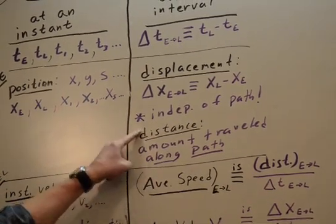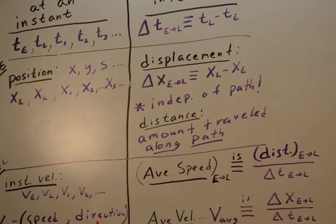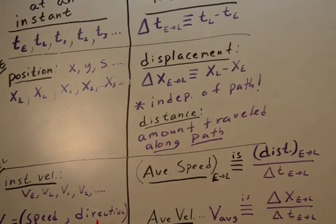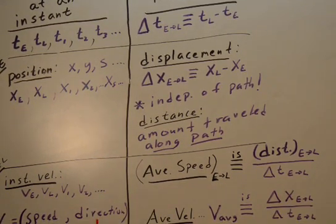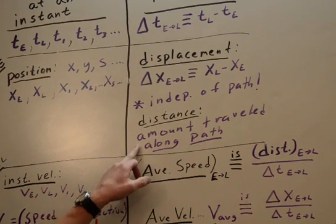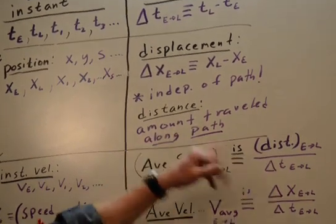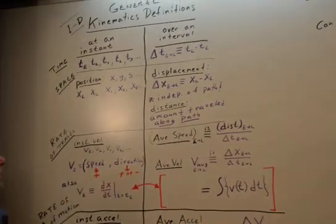But distance does—how much exercise you get does depend on the path. There's not a simple way to write that equation. I mentioned you can write a line integral for that, but we're not doing that now. It's often upper division. But it's how much you traveled, how much exercise you got.